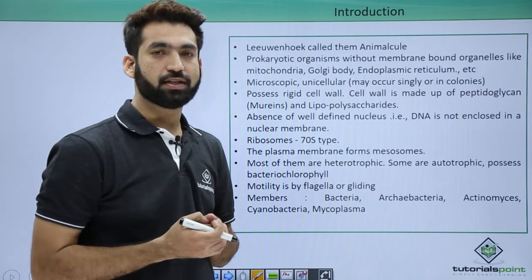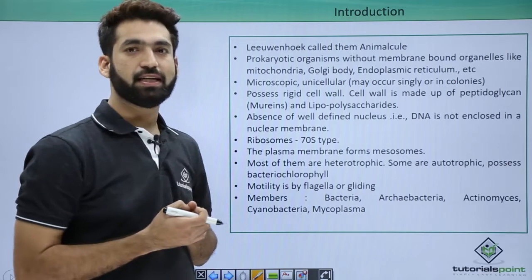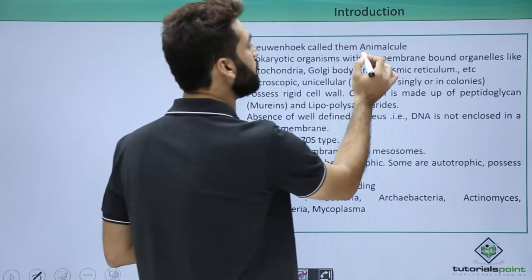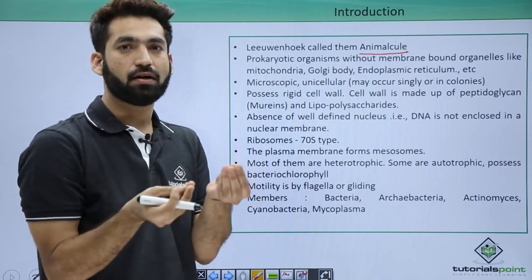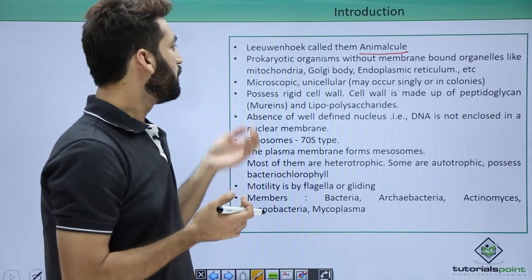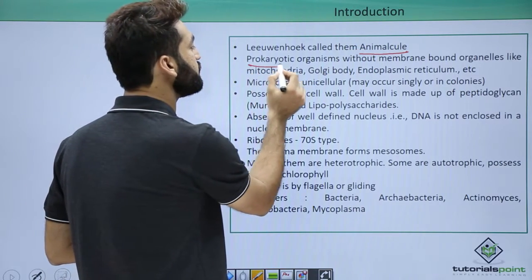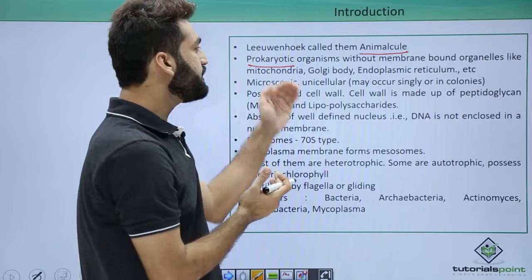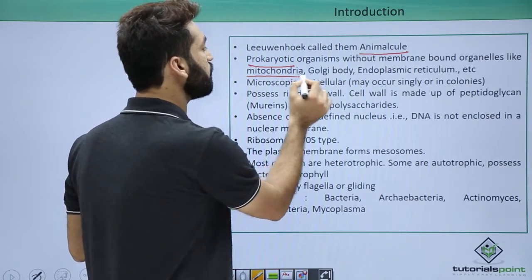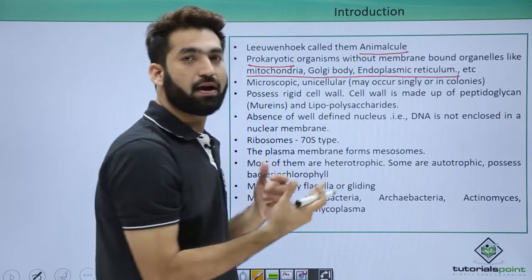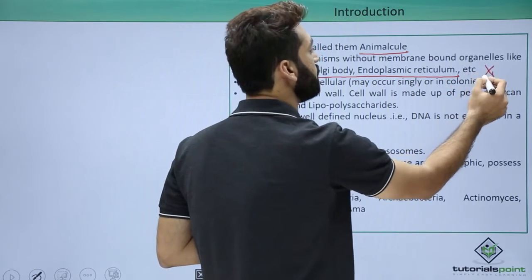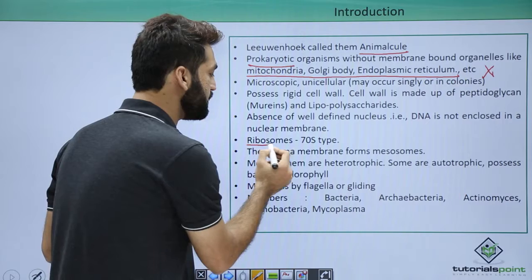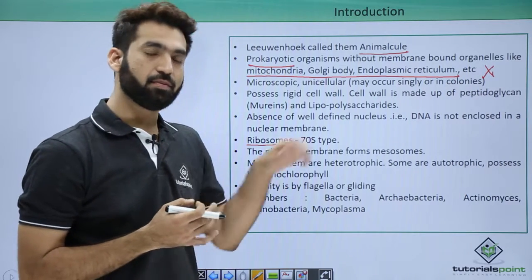The first time bacteria were seen by Anton van Leeuwenhoek in the teeth scum and he called them animalcules, meaning animal-like molecules. Because they are prokaryotic organisms, they don't have all membrane-bound organelles like mitochondria, Golgi body, or endoplasmic reticulum. All organelles are absent except one very important organelle which is ribosome. So ribosomes are present in Kingdom Monera members.